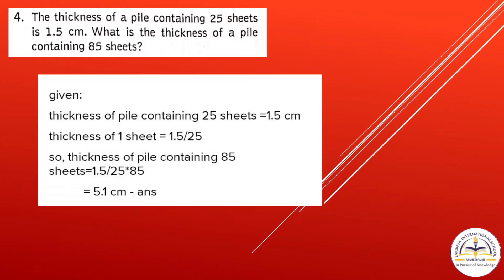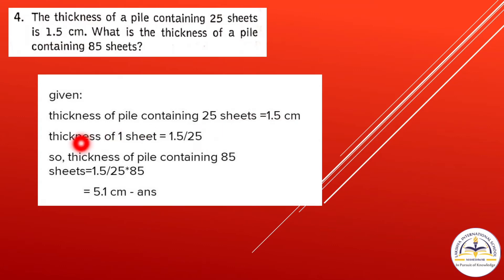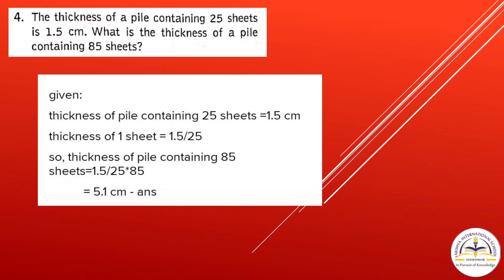Question 4: The thickness of a pile containing 25 sheets is 1.5 centimeters. What is the thickness of a pile containing 85 sheets? Find the thickness of one sheet: 1.5 divided by 25. Then multiply by 85 to get the thickness of 85 sheets, which is 5.1 centimeters.